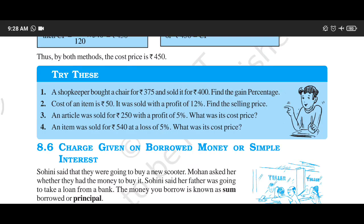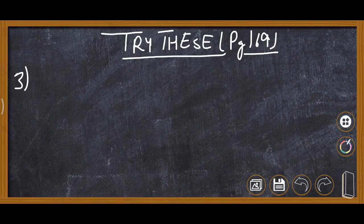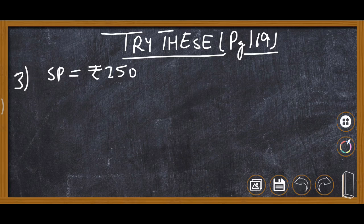Question number 3: An article was sold for rupees 250 with a profit of 5 percent. What is the cost price? We are required to find CP. The formula is: CP = 100 upon (100 plus gain percent), multiplied by SP. Selling price is rupees 250 and gain percent is 5 percent.